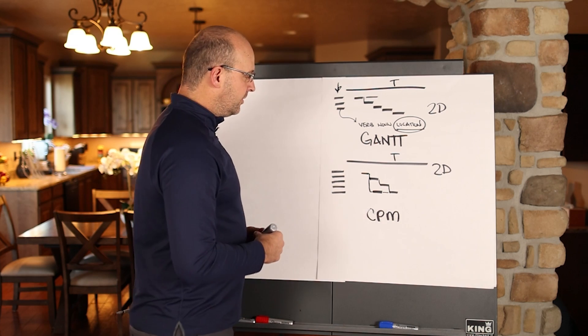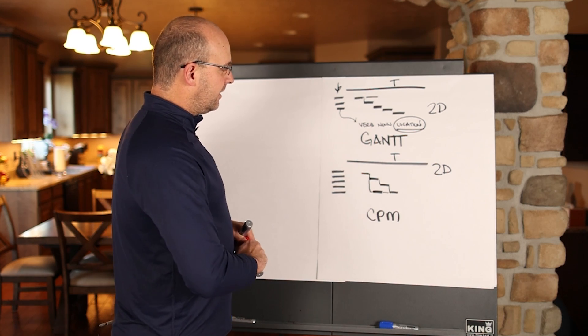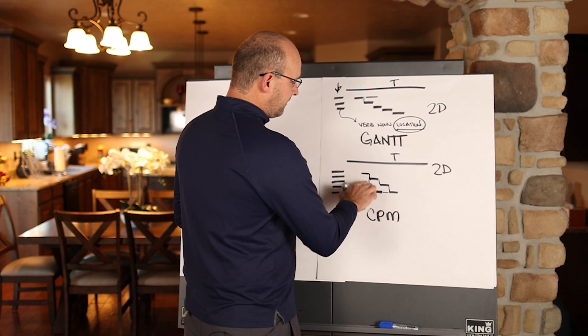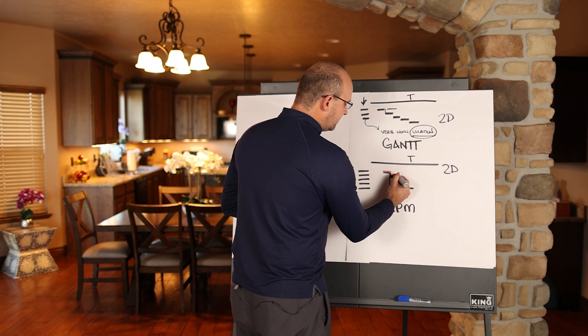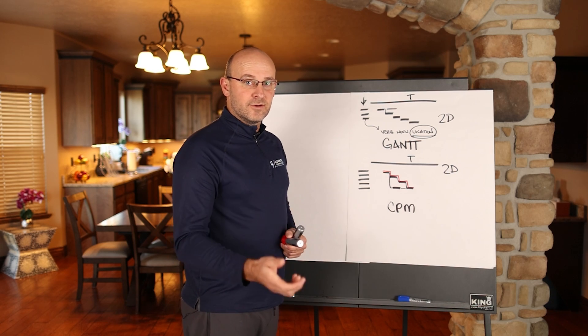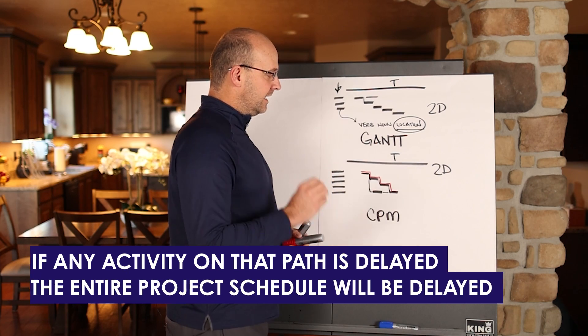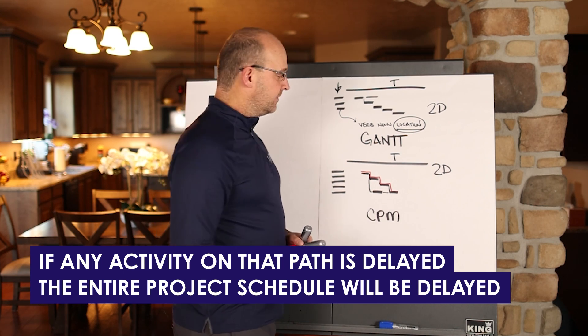What the computer will do with the algorithm that will run a forward and a backward pass is it will calculate the duration with these dependencies and find the longest path. So as you can see in this little diagram, that now is the critical path or the longest path, where if any activity on that path is delayed, the entire project schedule will be delayed.